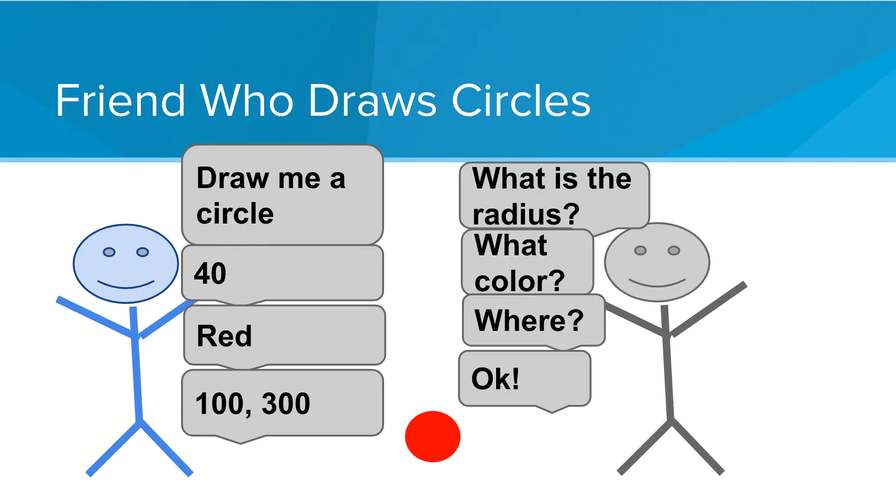Then your friend says, okay, and you get your circle. Your friend would know exactly how to create a circle. He would just be waiting for instructions from you.